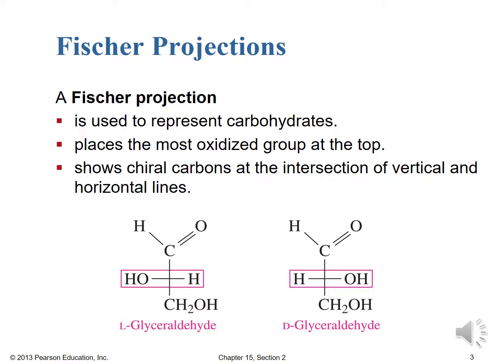In the Fischer projection on the left, the hydroxyl group is on the left, making it the levorotary or left-handed form of glyceraldehyde. In the projection on the right, the hydroxyl group is on the right, giving us dextrorotary or D-glyceraldehyde. Dexter, of course, being the Latin for right-handed — that's how we determine D and L notation for chiral carbons in a carbohydrate.